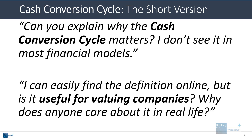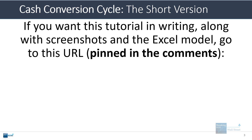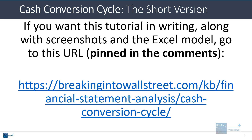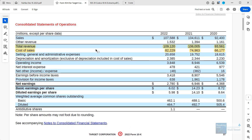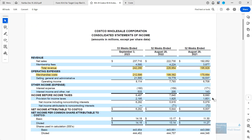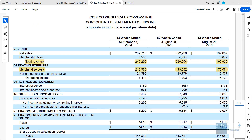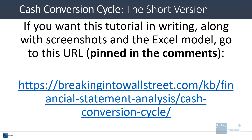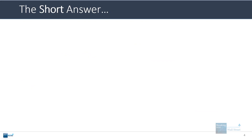I'm going to give you the short answer to this question in a few minutes, and then we'll go into it and look at some more detailed examples and explanations after that. If you want everything here in writing, along with the screenshots, the Excel models, and the PDFs, you can go to this URL on screen, or just search for cash conversion cycle BIWS. We also have PDF extracts for Target and Costco, so you can make these calculations yourself and follow along.